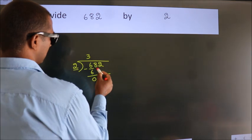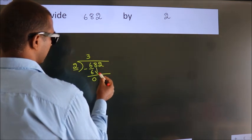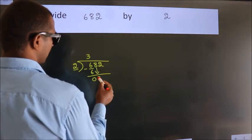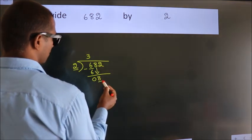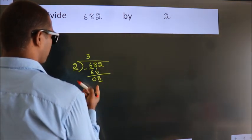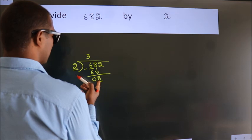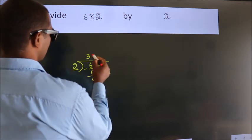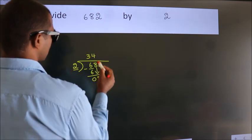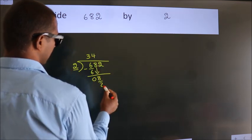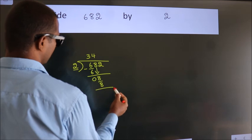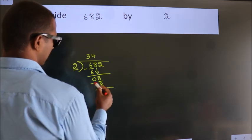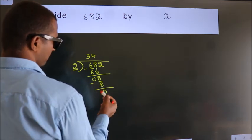After this, bring down the beside number. So 8 comes down — so 8. When do we get 8? In the 2 times table: 2 fours are 8. Now we subtract. We get 0.